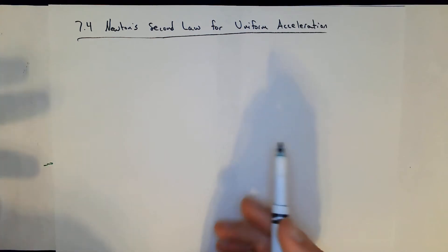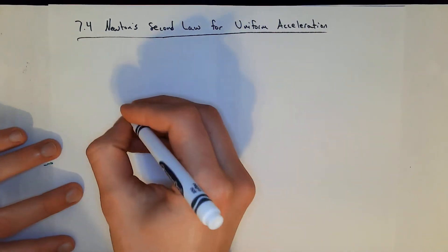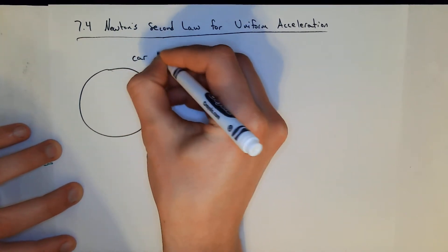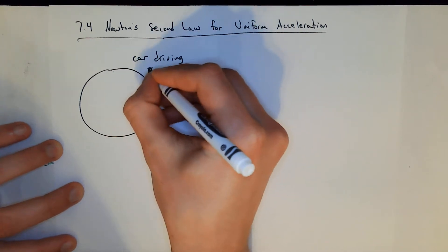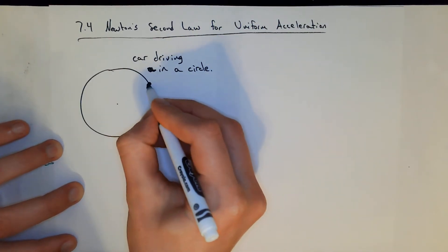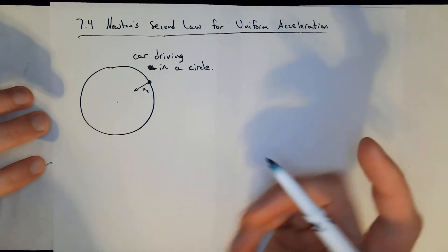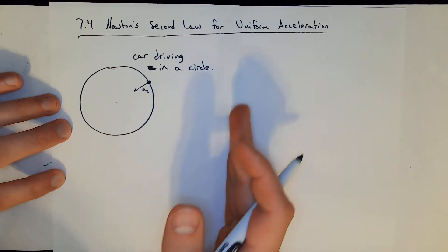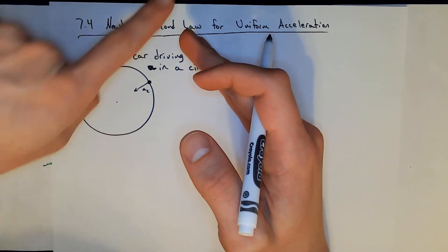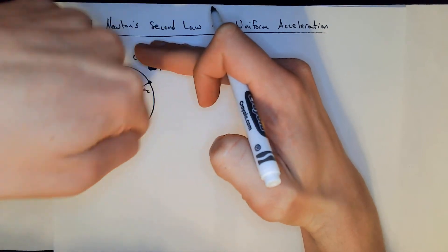Some force must be acting on the object. For example, if we have a car driving in a circle, there is centripetal acceleration pointing toward the center of the circle. In this case, it's the friction on the tires, because we are trying to get the car to turn. The friction is pointing inward toward the center.